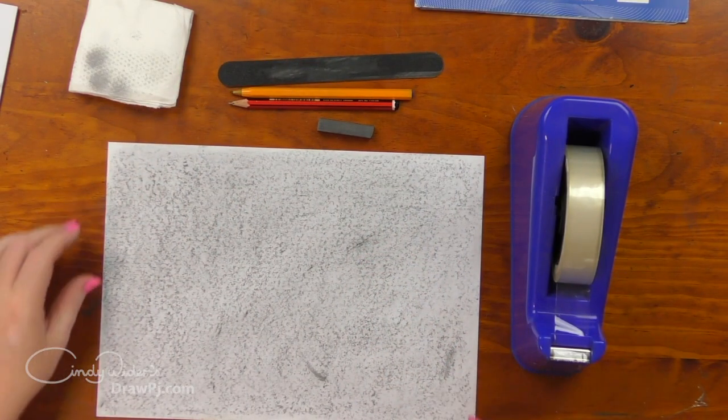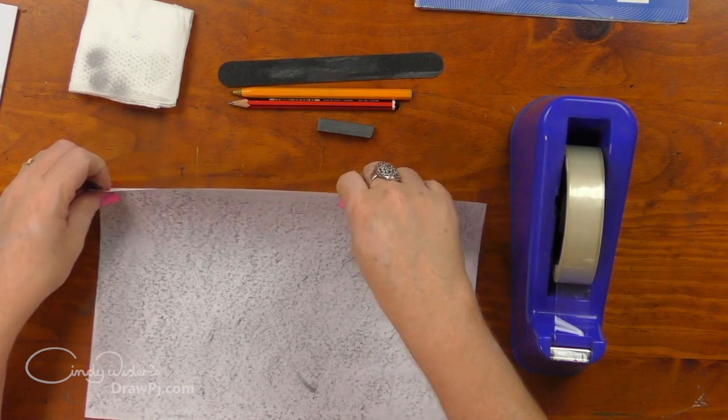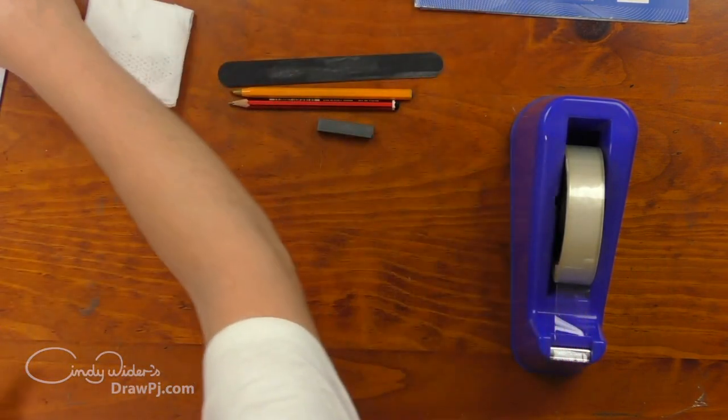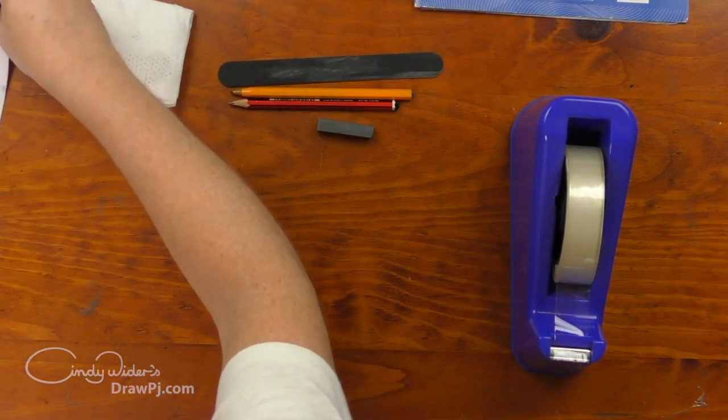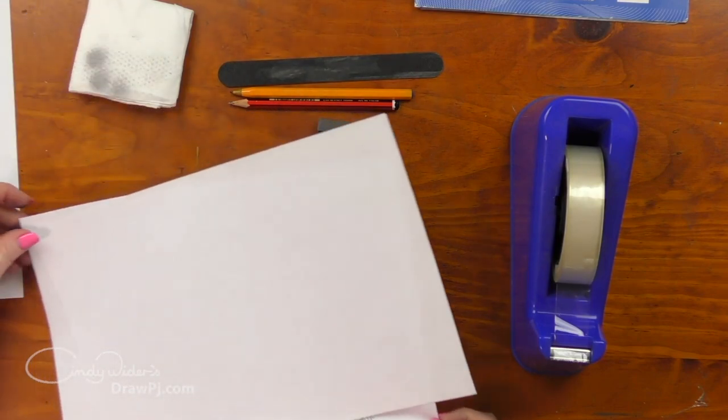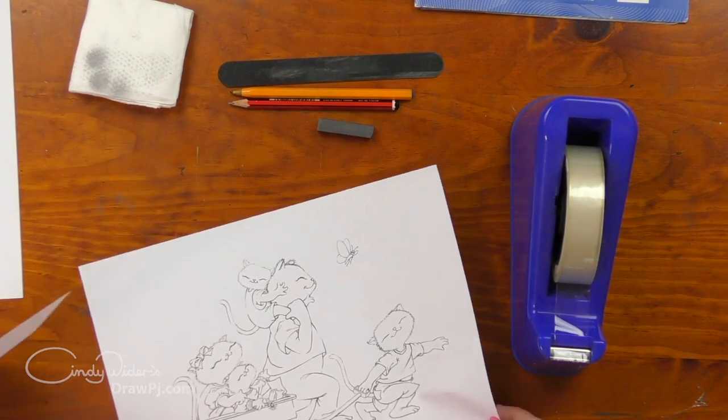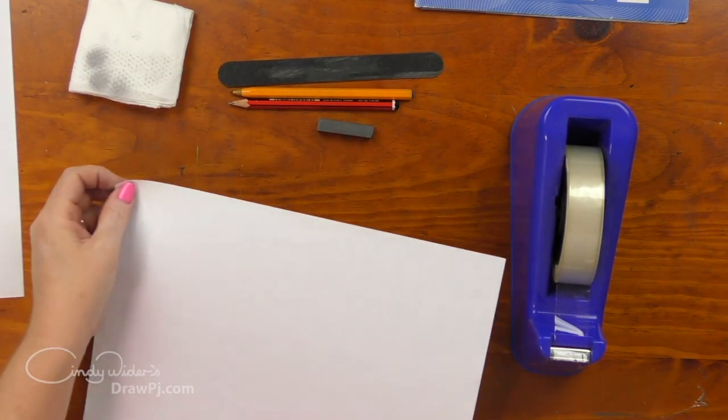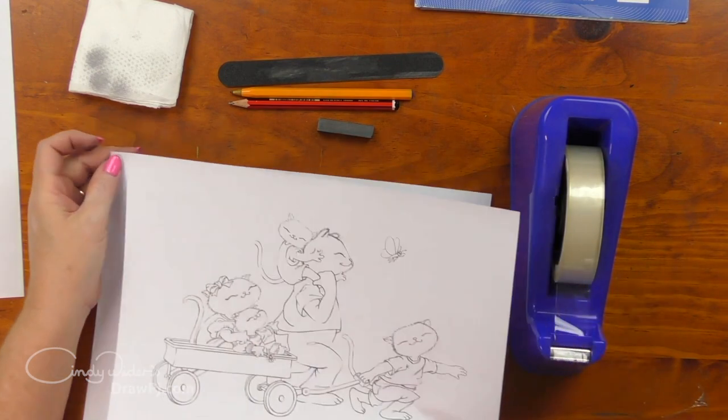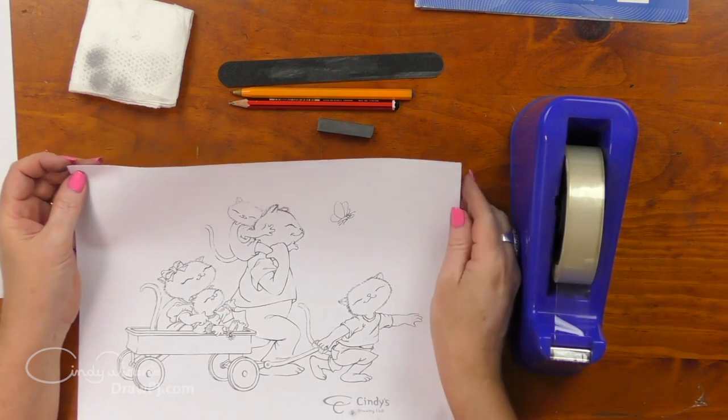Now the next thing that we need to do, we'll just set that aside for a moment and we will now get our picture. So we have the drawing that we want to transfer and then we have a blank sheet of paper to go underneath. And like I said, this could be quality paper that you have underneath if you want to.